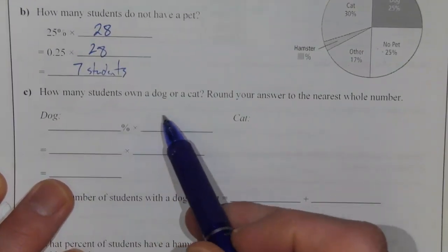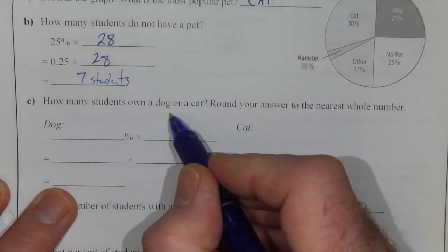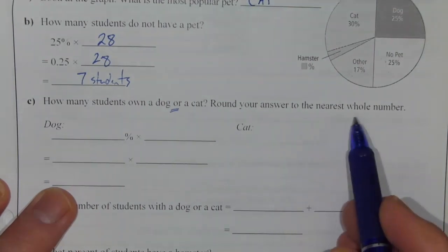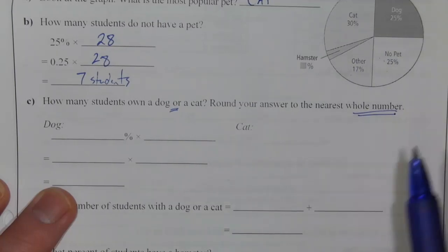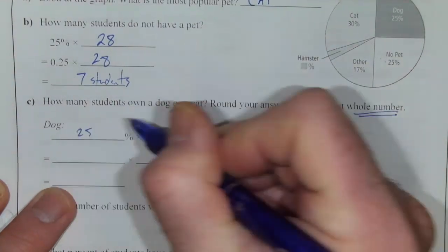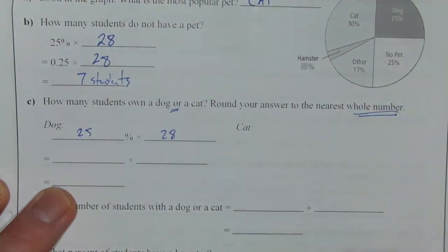Question C, how many students own a dog or a cat? Round your answer to the nearest whole number. So, dog is 25%, so 25% of 28 students for the dog.